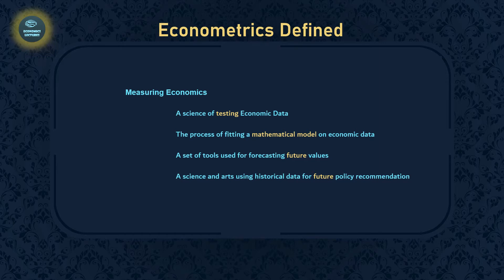The first is the general equation. In a general equation, we can only show that two variables are related. For example, quantity demanded is a function of price — it is related to price — but this format does not tell us anything about the direction or magnitude of the relationship, only that these two variables are related.